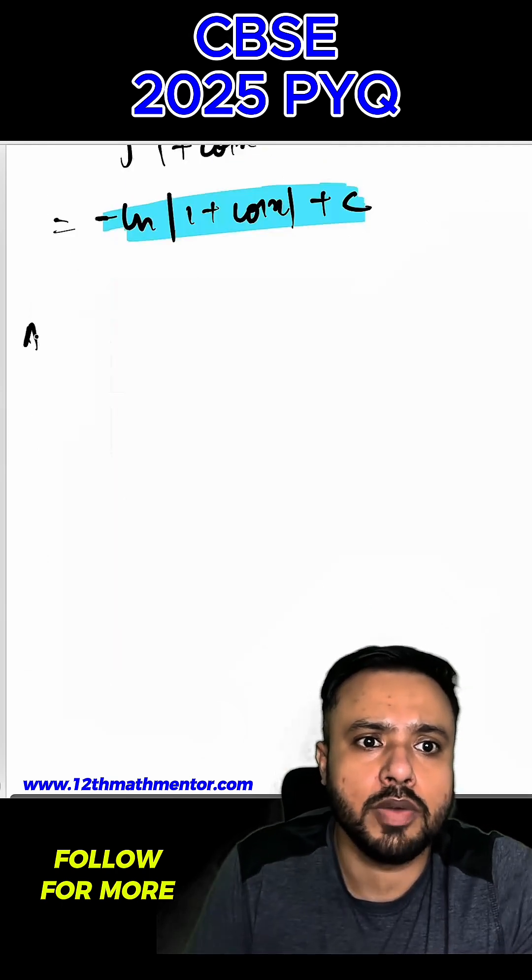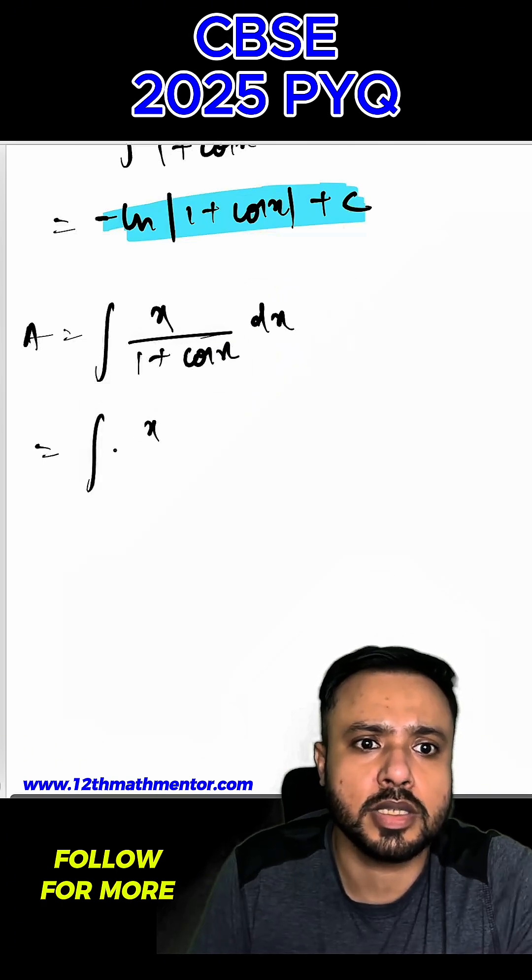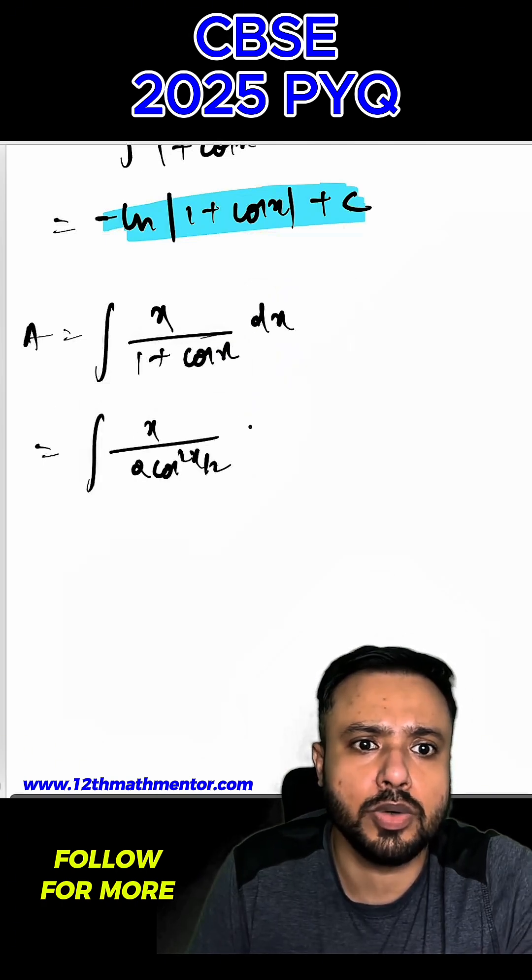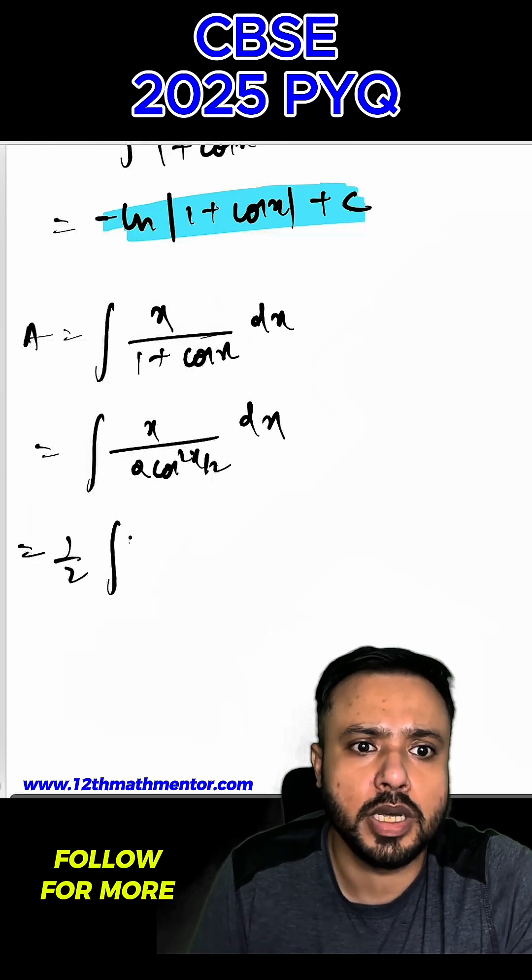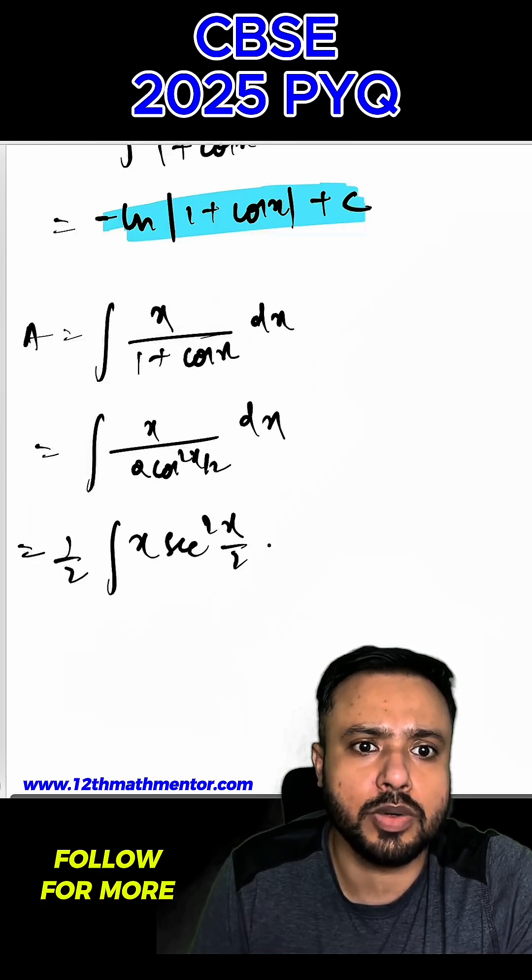Now we will solve A. A was integral of x upon 1 plus cos x dx. I can write it as x upon 2 cos square x by 2 dx, which is 1 by 2 integral of x sec square x by 2 dx.